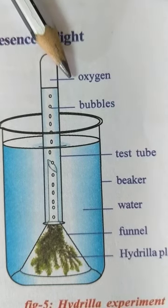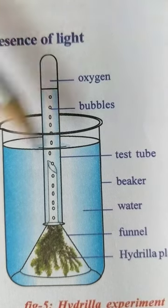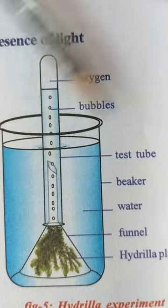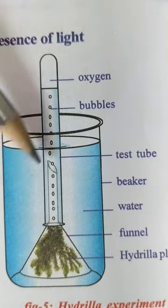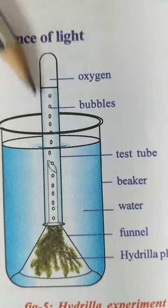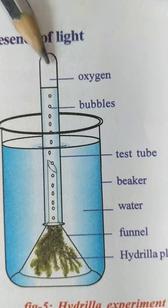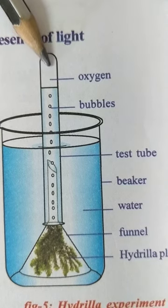This apparatus is kept in water, and after that you have to keep this apparatus under sunlight for two to three hours. Then you can see bubbles coming from the twigs of Hydrilla, and these bubbles reach the top of the test tube.